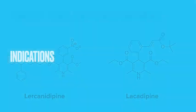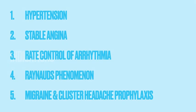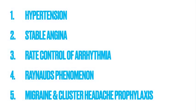We're now going to move on to the indications as to why you might want to start a calcium channel blocker, and there are five key reasons these drugs are used. The most common is hypertension, followed by the management of stable angina. We also use the non-dihydropyridines for rate control of arrhythmia, and then you often see them used in Raynaud's phenomenon and cluster headache or migraine prophylaxis. You'll need to use a different calcium channel blocker for each of these, and in the next two sections I'll explain why you make that choice.